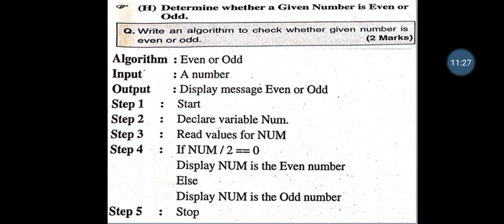Determine Whether a Given Number is Even or Odd. Algorithm name is Even or Odd. Input is a number; output is Even or Odd. Step 1: Start. Step 2: Declare variable Num. Step 3: Read the value for Num. Step 4: If Num divided by 2 equals 0 (remainder is 0), display Num is an Even number. Otherwise display Num is an Odd number. Last step: Stop.